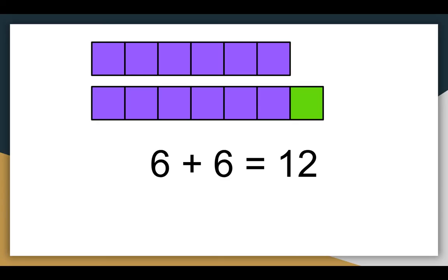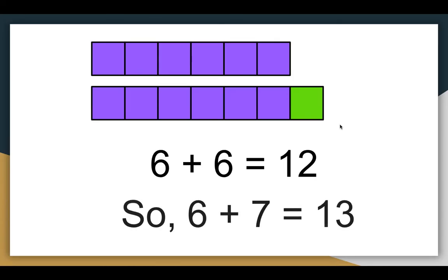Now pause the video and write what equation you could solve with all of the cubes together. I see six on the top and seven altogether on the bottom — six purple and one green. So my new fact is six plus seven. If I already figured out that six plus six is 12, I only have that one more green one, so six plus seven is 13. It's just one more.